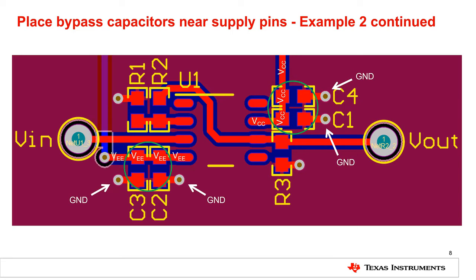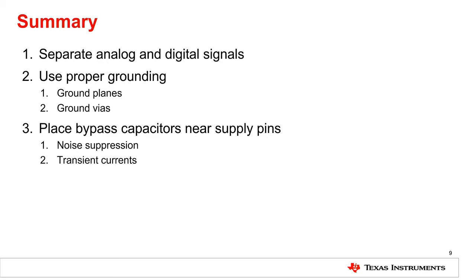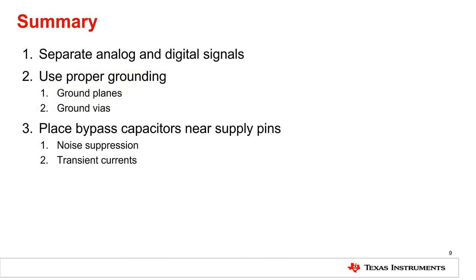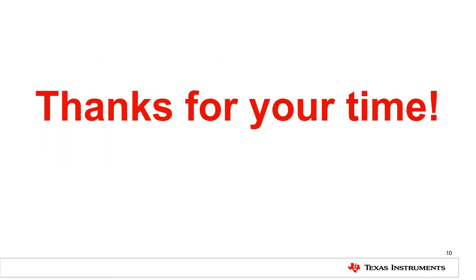Finally, remember that supply pins connected to ground, such as the V-minus pin in a single supply op amp configuration, do not need bypass capacitors. In summary, strong op amp layouts involve more than simply routing some traces properly. This presentation covered the importance of separating analog and digital signals, using proper grounding, and placing bypass capacitors. While not an exhaustive list of op amp layout techniques, the topics covered by this series should provide you with a solid foundation and confidence for your op amp PCB layout designs. That's all for now, thanks for watching.